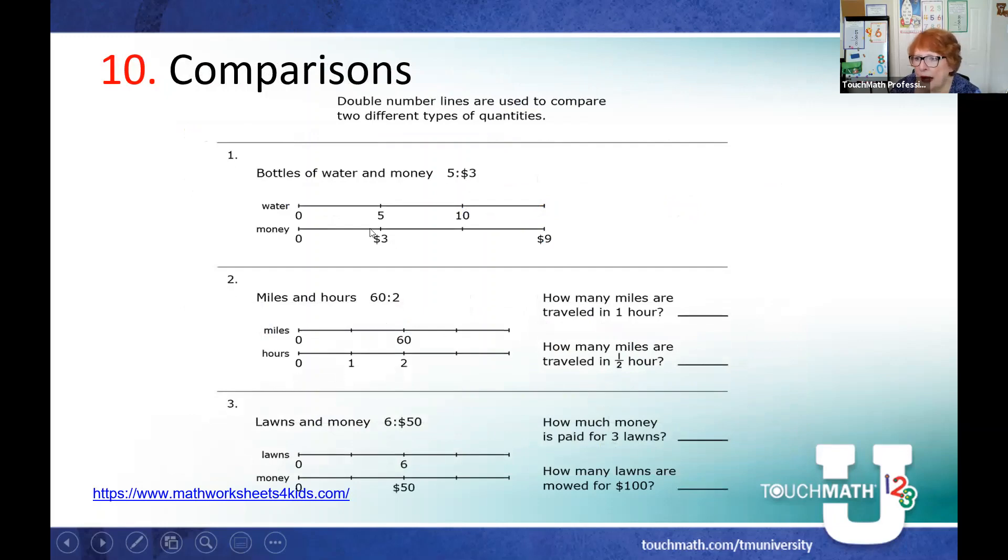And then another example is using parallel number lines to do comparisons. So, in this first example, five bottles of water equals three dollars. Well, how much is ten bottles of water going to be? And it would have to be somewhere between three and nine. So, apparently, you get, the more you buy, the cheaper it is.